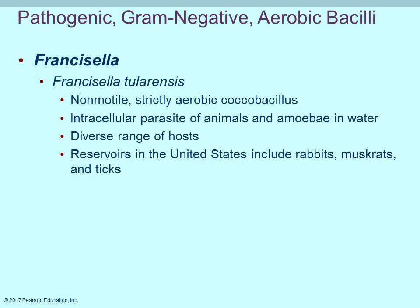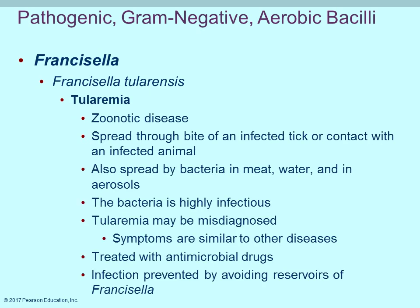Francisella tularensis is an intracellular parasite of animals with a large host range. In the United States, reservoirs include rabbits, ticks, and muskrats. It can cause tularemia, spread by a bite from an infected tick or direct contact with an infected animal. The symptoms of tularemia are similar to other diseases, making it often misdiagnosed. Once properly diagnosed, it can be treated with antibiotics. Care should be taken when handling rabbits or other known reservoir animals on a regular basis.